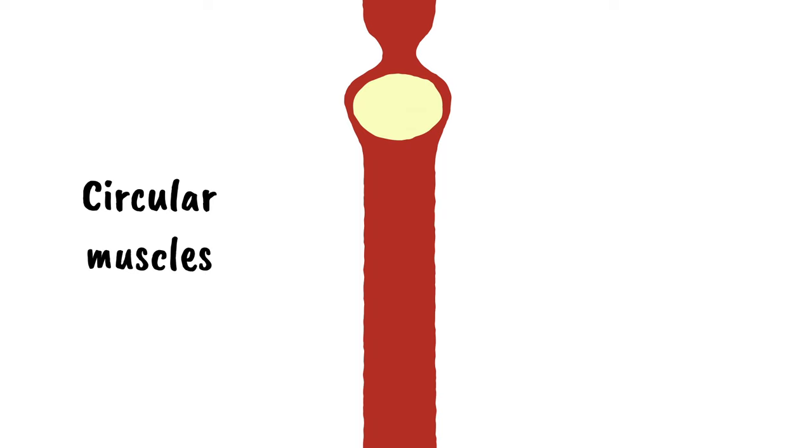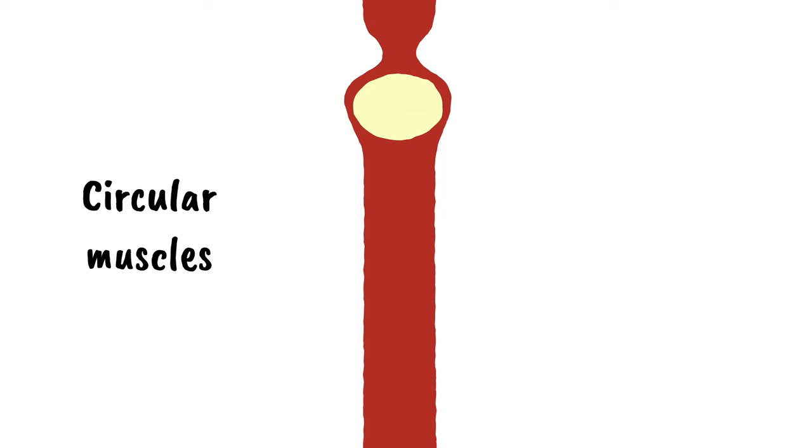There are circular muscles in the esophagus and other parts of the digestive system. When they contract at one point, the tube gets narrower at that place. This squeezes the food beneath it downwards.